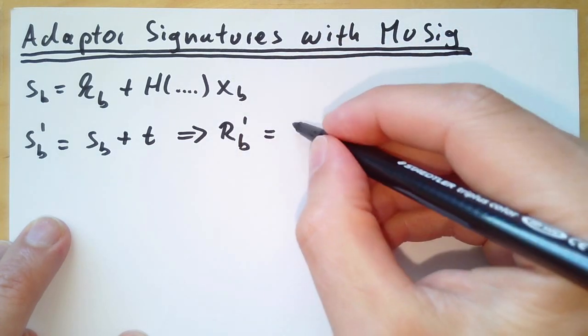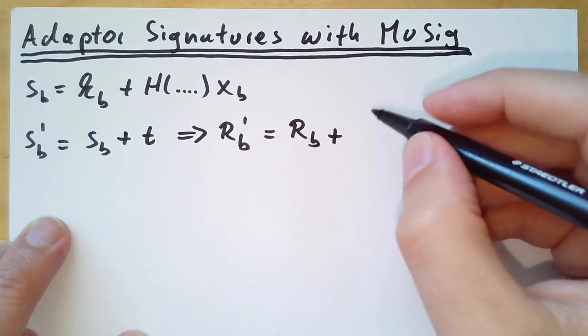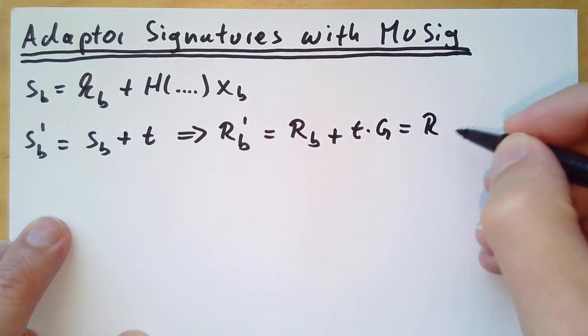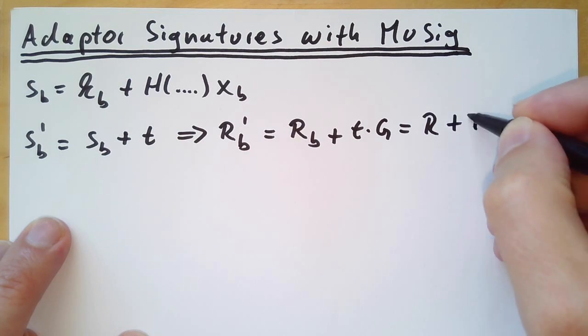Now we have rb' which is the same as the r value before, but you add t times g to it. You could actually say rb' equals rb plus t capital T.